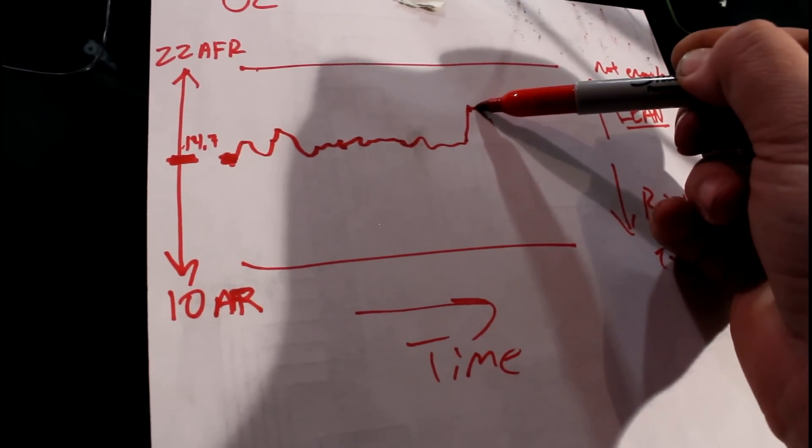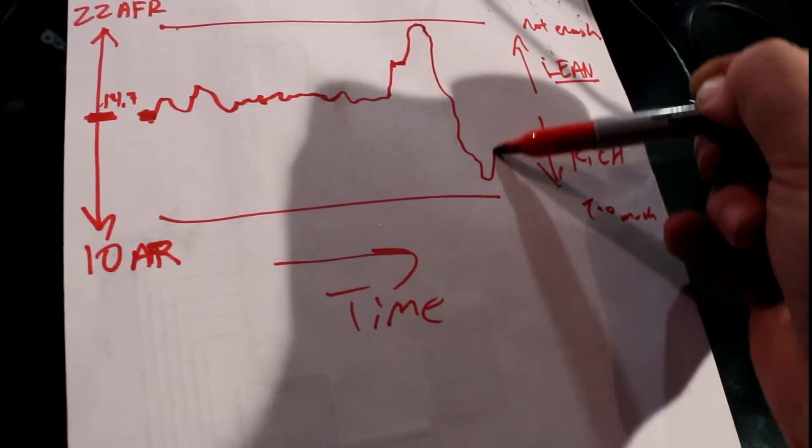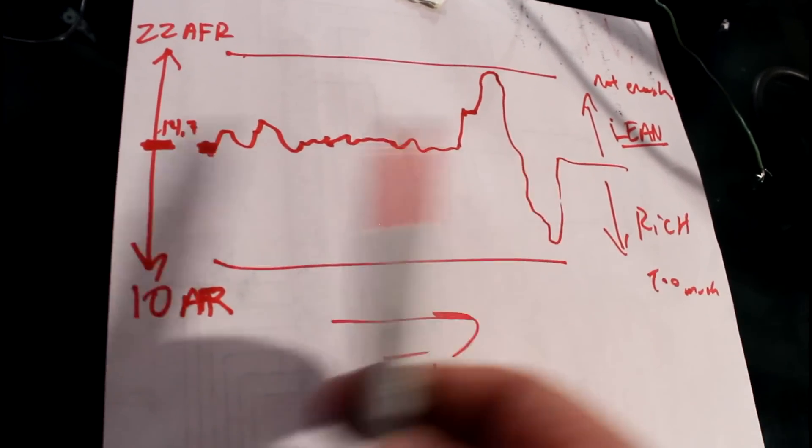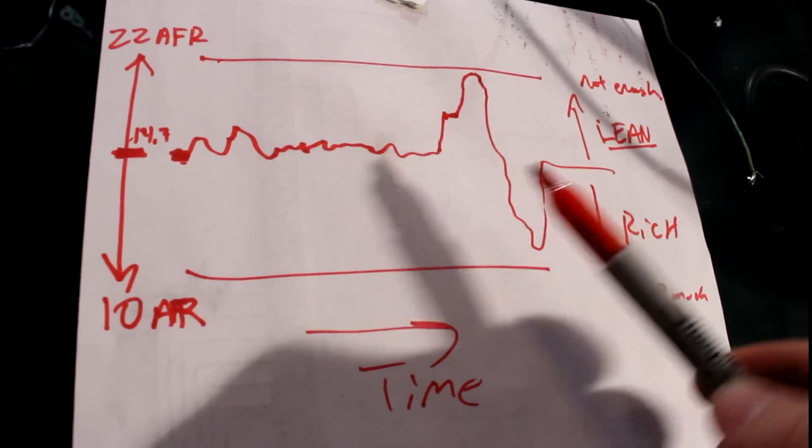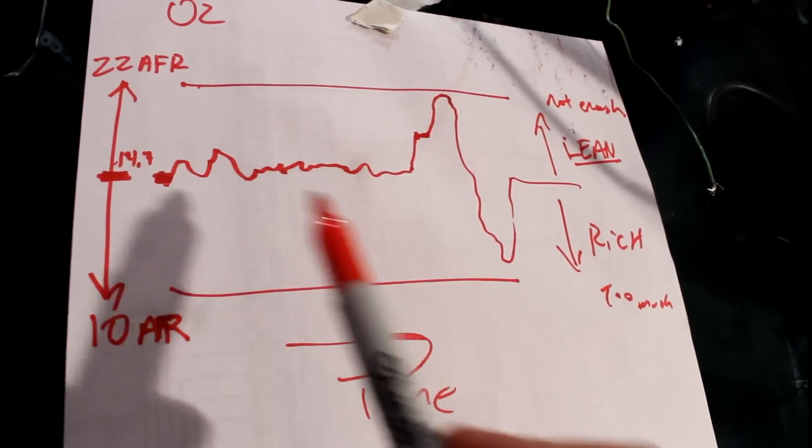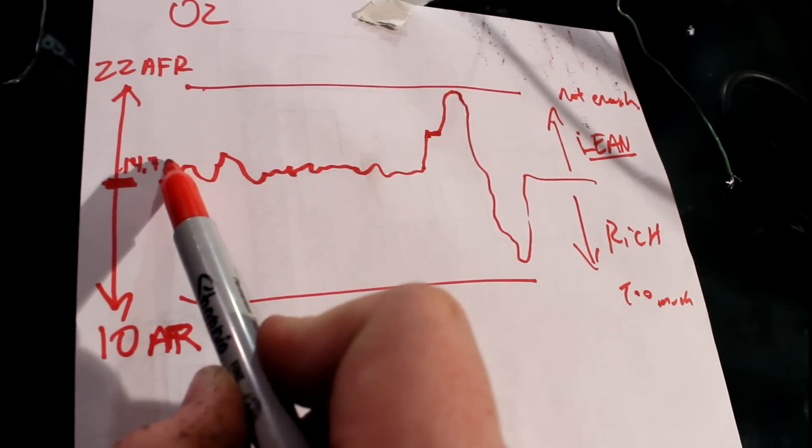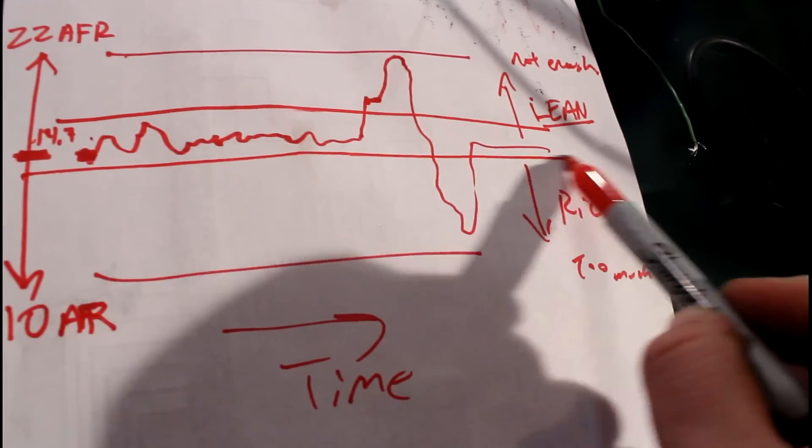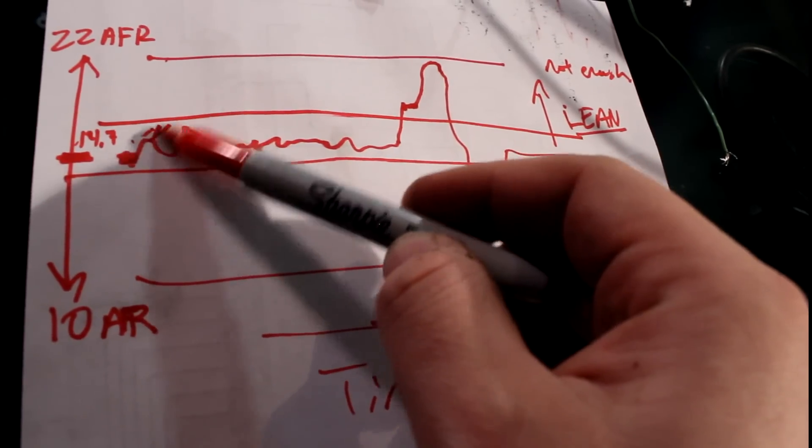So as you're driving along across time your car may be doing something like this. Or if things go wrong maybe you jump way lean or you go way rich. So that's just the curve of how your engine is going to run. Or if it's badly tuned things like this will happen.